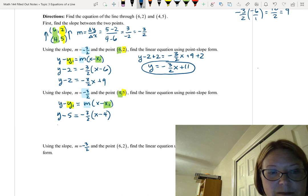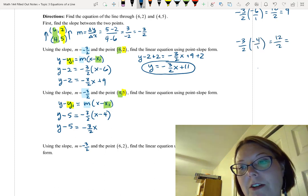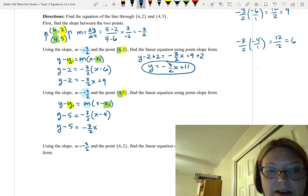y minus 5 equals negative 3 halves times (x minus 4). We'll do our distribution. So y minus 5 equals negative 3 halves x, and then we need to do negative 3 halves times negative 4. That's negative 4 over 1. That's a positive 12 over 2, which is 6. So we have negative 3 halves x plus 6 after the distribution.